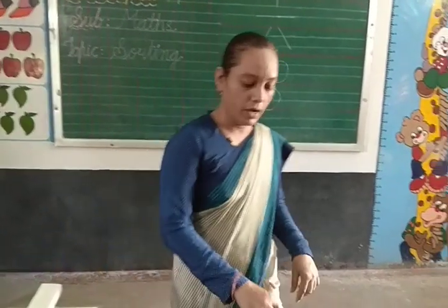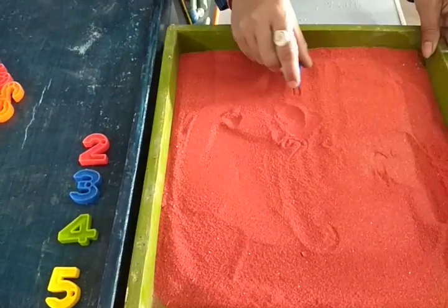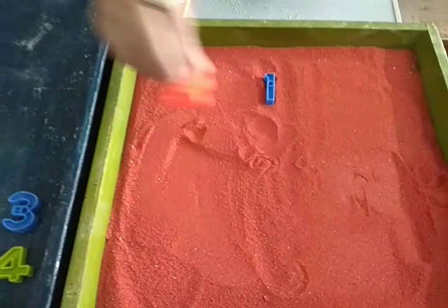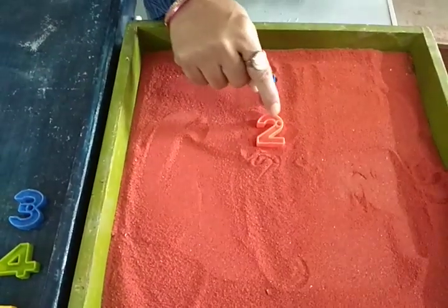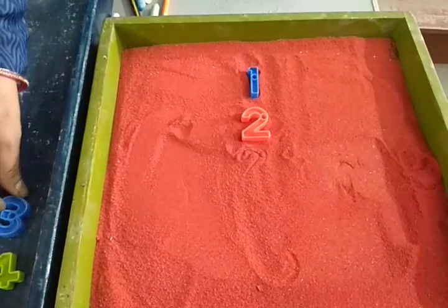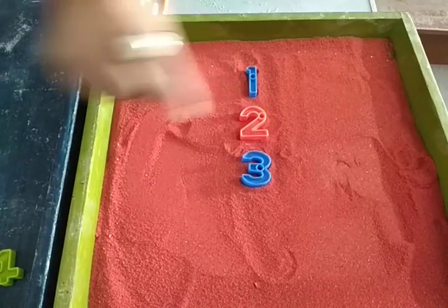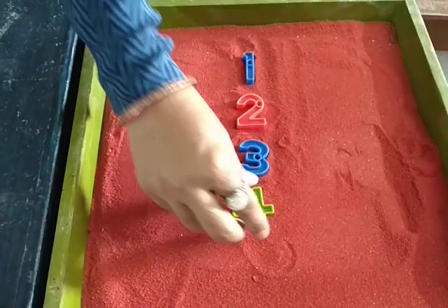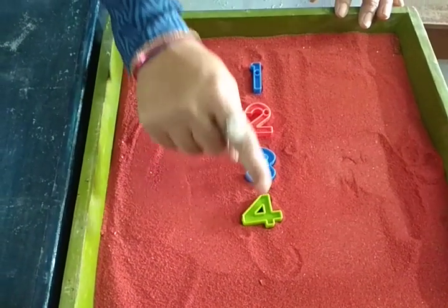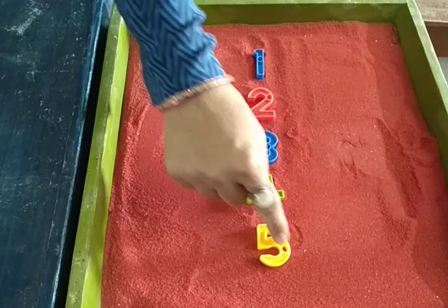Now numbers — identify numbers 1 to 5. Number 1: standing line. After 1, number 2: curve, slant line, slipping line. After 2, number 3: curve, curve. After 3, number 4: slanting line, slipping line, standing line. After 4, number 5: slipping line, standing line, curve.